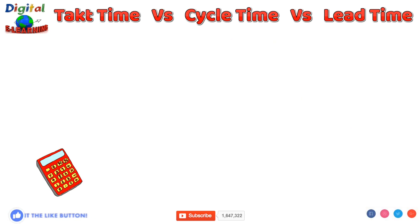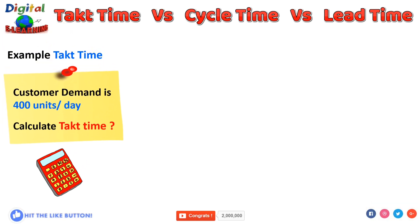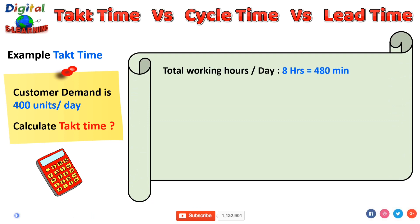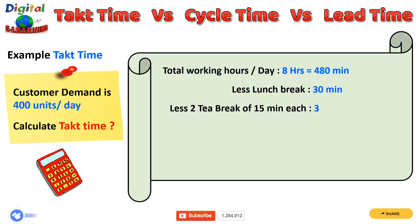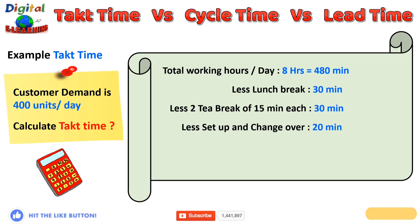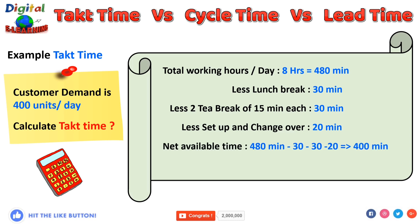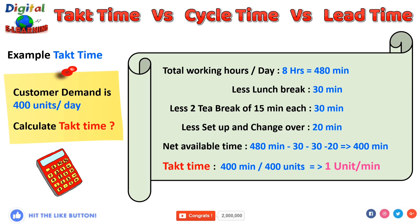Let us see one example of calculating takt time. The customer demand is 400 units per day and total working hours are 8, which equals 480 minutes. We subtract a lunch break of 30 minutes, two tea breaks of 15 minutes each (another 30 minutes), and 20 minutes of setup and changeover time. The net available working time is 480 minus 80, which gives us 400 minutes. The takt time formula is net available time divided by customer demand — that is 400 minutes divided by 400 units — giving a takt time of 1 minute per unit. In practice, you should target 50 seconds per unit to ensure you meet the customer demand.